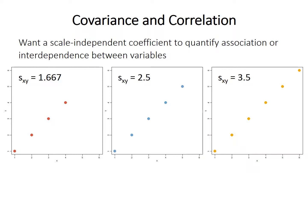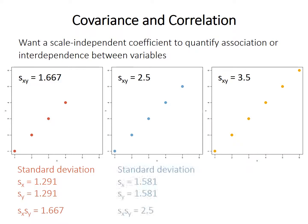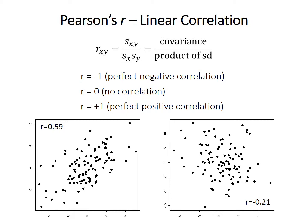Looking at the same three examples, in the left panel the standard deviation of each variable (both x and y) is 1.291, and the product of the standard deviations is 1.667 — the same as the covariance. In the middle panel the product of standard deviations is 2.5, and 3.5 in the right panel. So when points describe a perfect line, the covariance equals the product of the standard deviations. That leads us to Pearson's product moment correlation coefficient r: r is the covariance of the two variables divided by the product of their standard deviations.